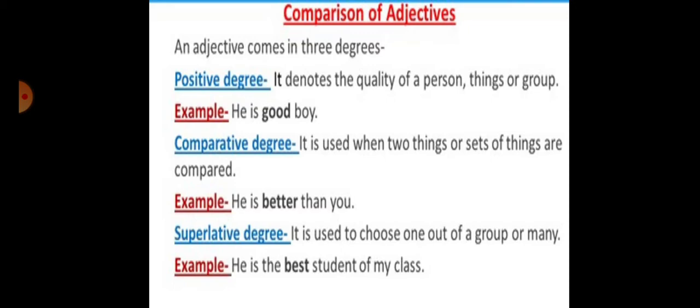What do we do with these three levels? We describe nouns by the first degree—it tells the quality of a person, place, or thing. For example, he is a good boy. But if we compare that boy with someone else, we say he is better than you. If the comparison is with the entire class or group, we say he is the best student of my class. In this way, we compare one thing to another by the levels of adjectives.